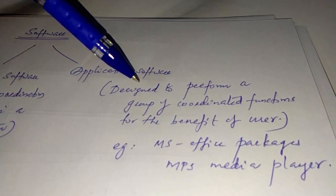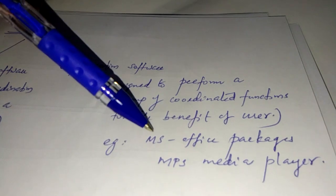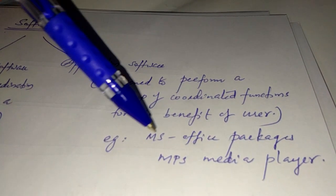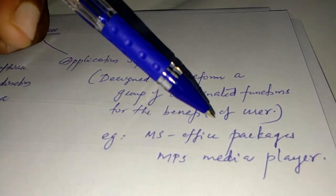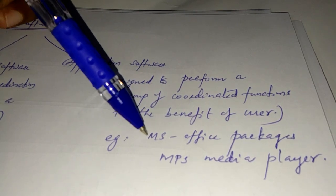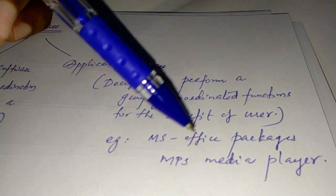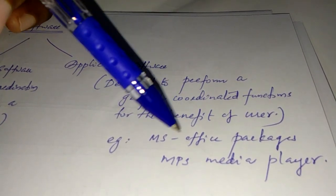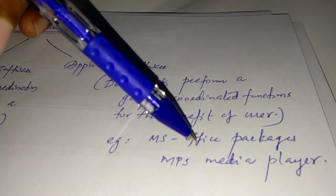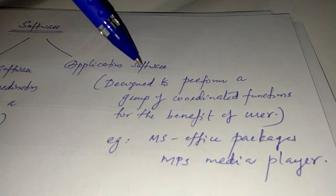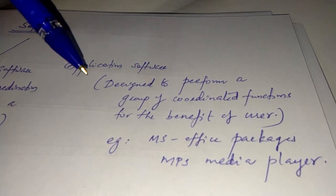For example, the MS Office package — MS Office includes Word, Excel, Spreadsheet, and PowerPoint presentation. This is a full applications suite. Microsoft designed the MS Office package for documentation and presentation purposes. These are the different types of software: system software and application software.